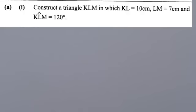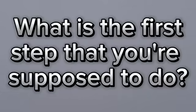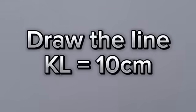The first question says: construct a triangle KLM in which KL is equal to 10 centimeters, LM is 7 centimeters and angle KLM is 120 degrees. The first step is to draw the line KL which is 10 centimeters.